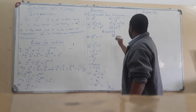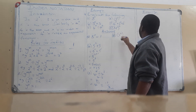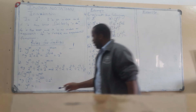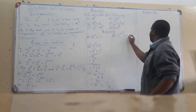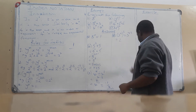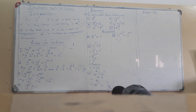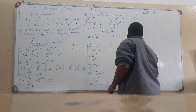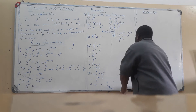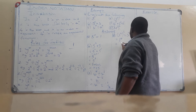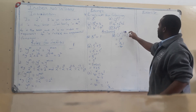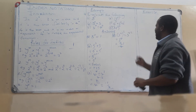For example d, we have 3 to the power 2, in brackets to the power 2. This corresponds to rule number three, so we multiply the powers: 2 times 2 is 4, giving us 3 to the power 4. Three to the power 4 is 81. When you have a double power, multiply the powers then find the actual value.